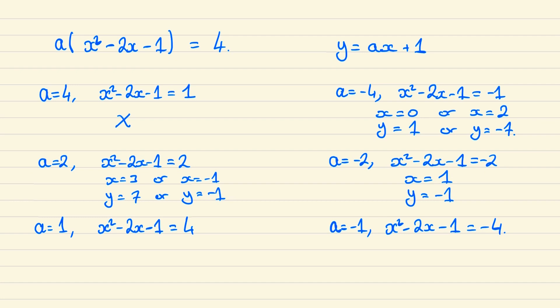In the final two cases where a is plus or minus 1 we have no solution. And so we have five integer solutions to this equation, namely (3, 7), (-1, -1), (1, -1), (0, 1), and (2, -7). And so we're done.